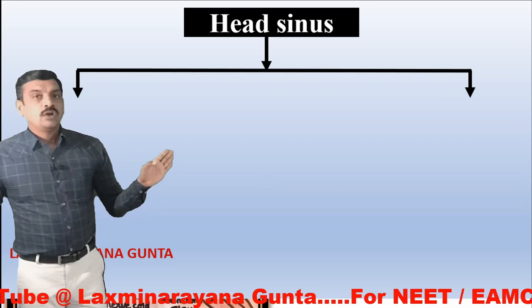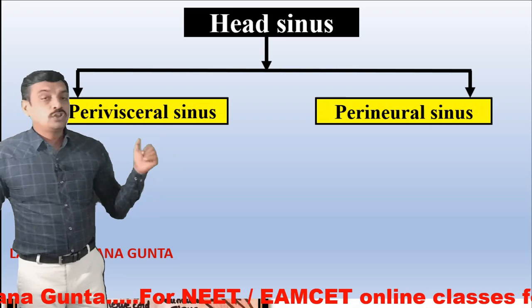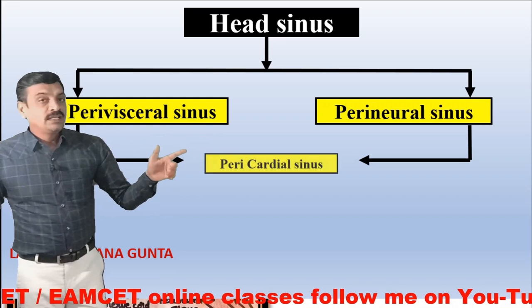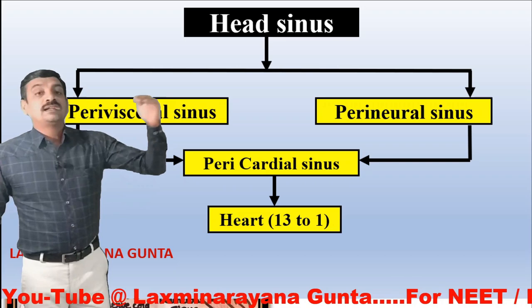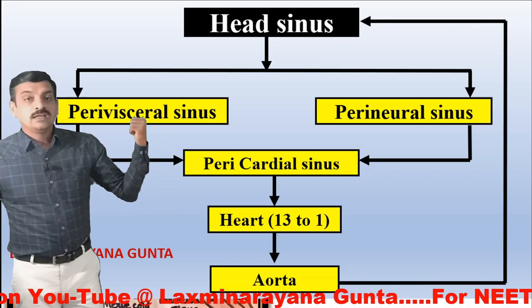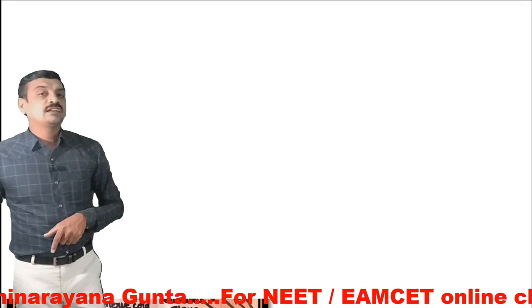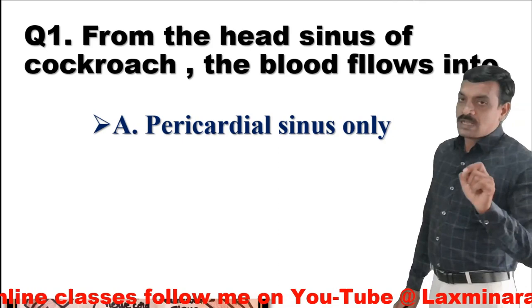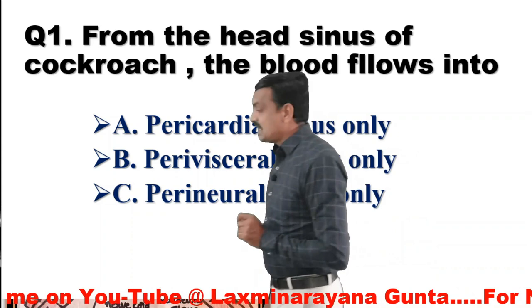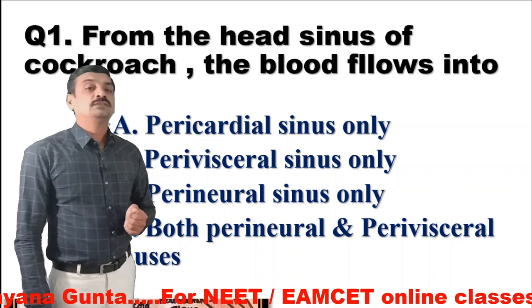To recap: from the head sinus, the hemolymph reaches both the perivisceral sinus and the perineural sinus. From there it reaches the pericardial sinus by contraction of alary muscles. After relaxation of alary muscles, blood enters the heart and flows anteriorly through the aorta back to the head sinus. First question: from the head sinus of cockroach, the blood flows into — both perineural and perivisceral sinuses — which is the correct option.